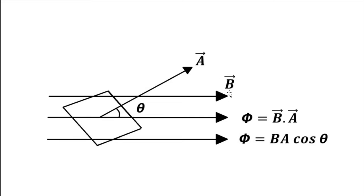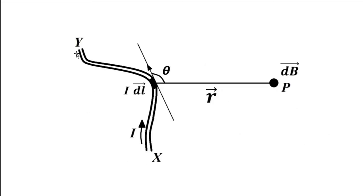So what Biot-Savart Law does is it is used to determine the value of B — the magnetic flux density, the strength of the magnetic field — in any current-carrying conductor at any point away from it located at a certain distance. Here we have taken a certain conductor — a current-carrying wire, let's say XY — and a current I is flowing through it.